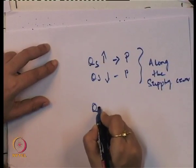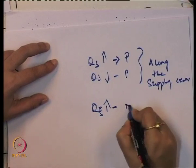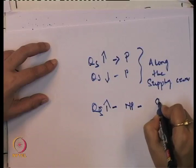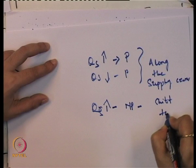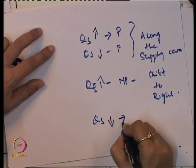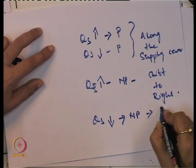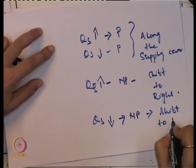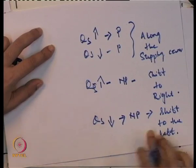If quantity supplied increases due to non-price determinants, there is a shift of the supply curve to the right. If quantity supplied decreases due to non-price determinants, the shift is to the left of the supply curve.